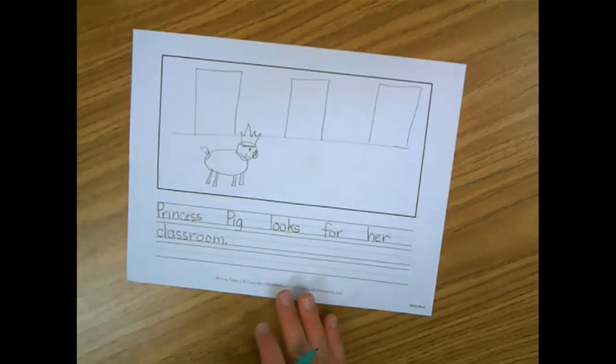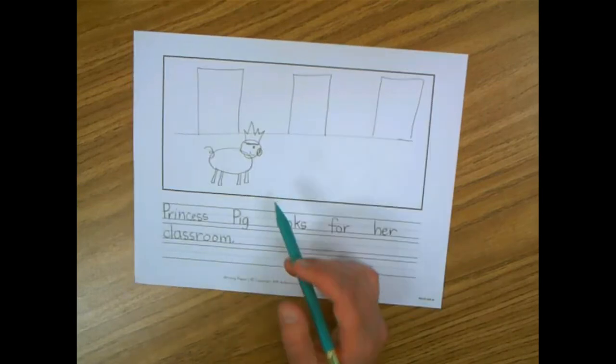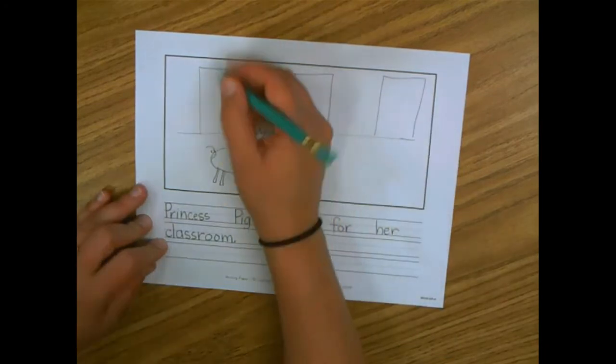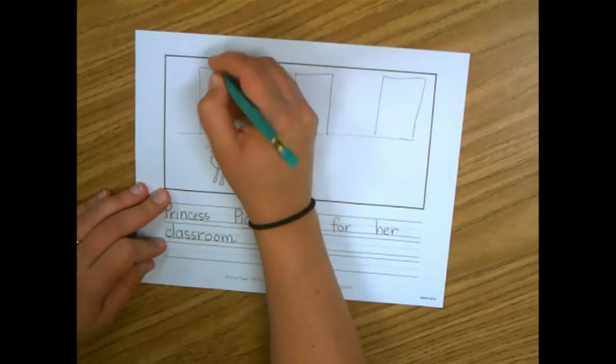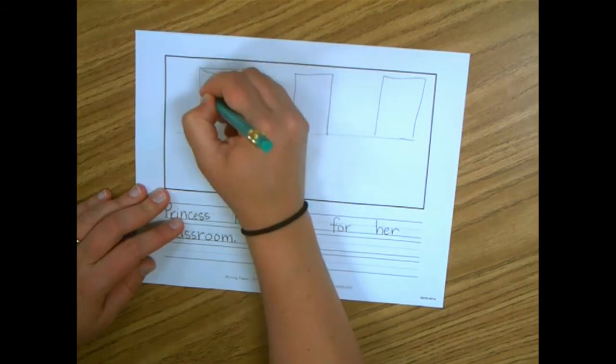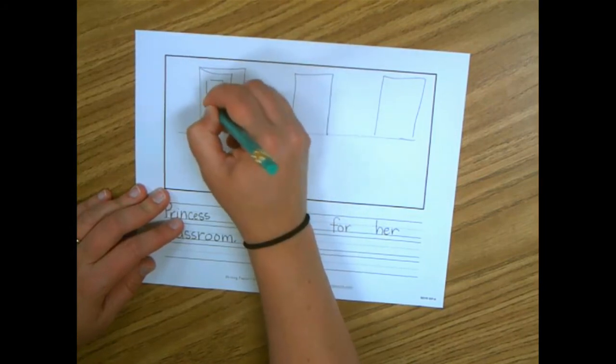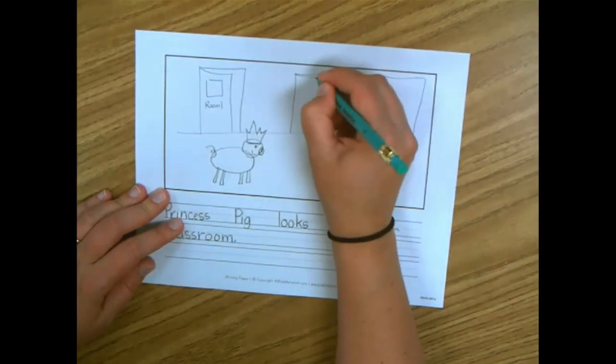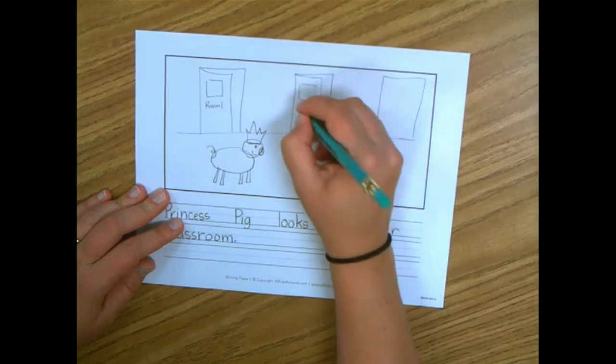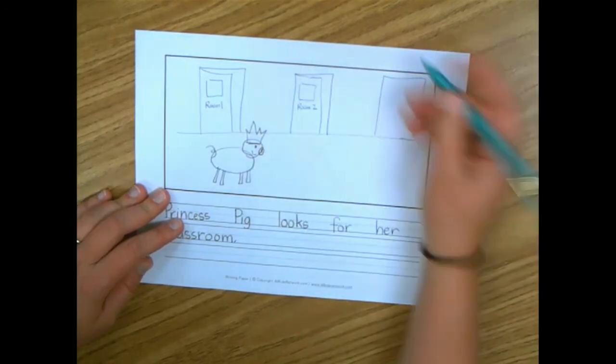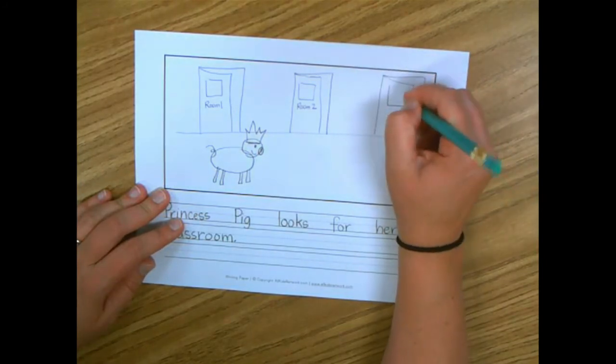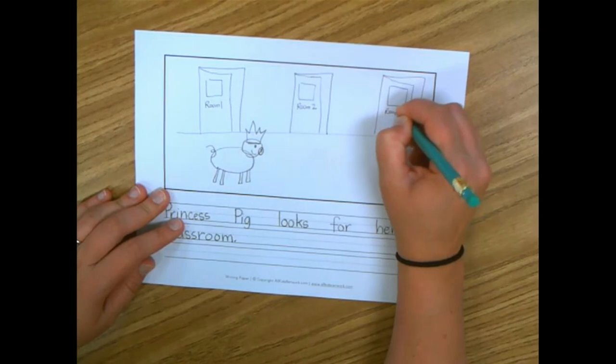Let me try again. I definitely need to add some details to this picture. This is a picture of the hallway, but it's very plain. So I'm going to add some doors. Maybe the door is open. There's a window. Room one. Here's my next door. There's a classroom window. Room two. And my last door is room three.